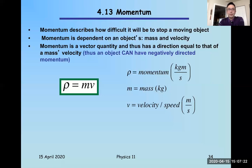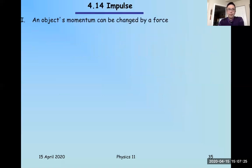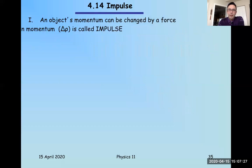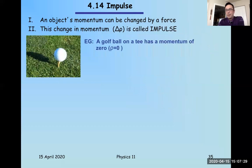Now, here we go, impulse. The change in the amount of momentum is known as impulse. Delta rho. See right here? Delta rho. Change in momentum. It's impulse. And right now we have this golf ball sitting on a tee. It's not moving, so its velocity is zero, so it has momentum of zero.